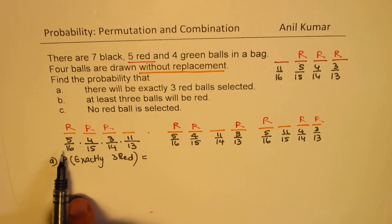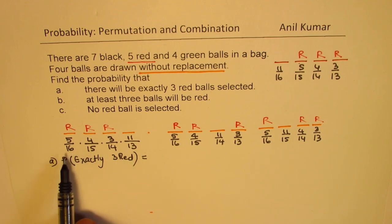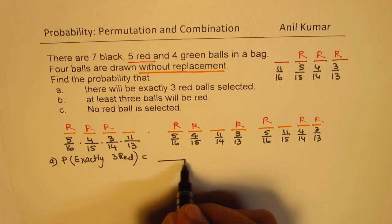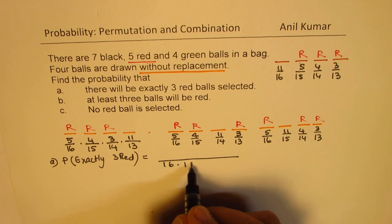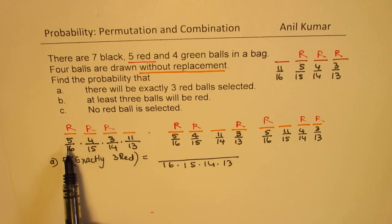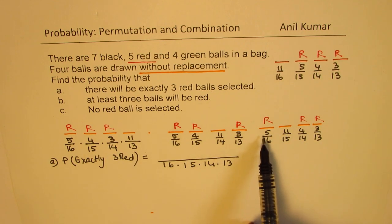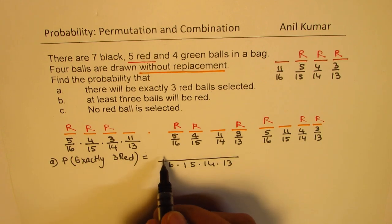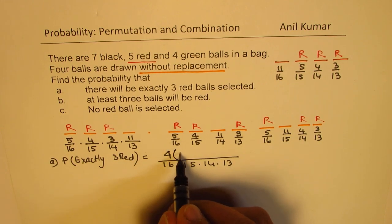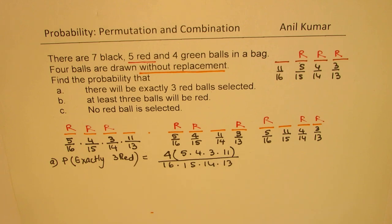You can see clearly that the denominators 16, 15, 14, and 13 are the same for all cases, so we can take that as common: 16 times 15 times 14 times 13. As far as the numerator is concerned, since we always have 3 red balls, we always have 5, 4, 3 and also 11. These numbers are constant, and we have them 4 times. So the total probability of getting exactly 3 red balls is 4 times (5 × 4 × 3 × 11) over (16 × 15 × 14 × 13).